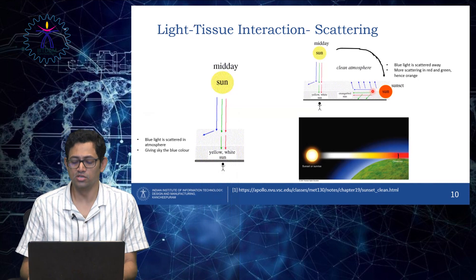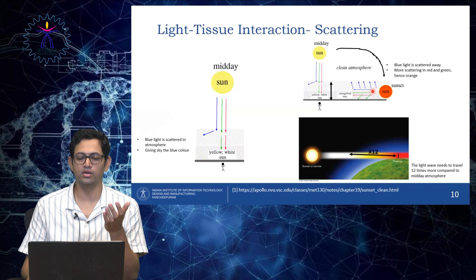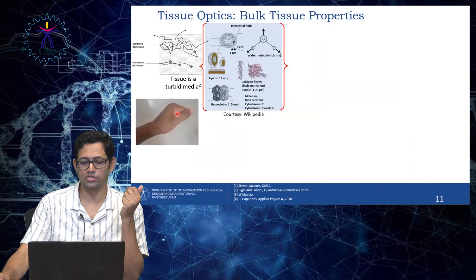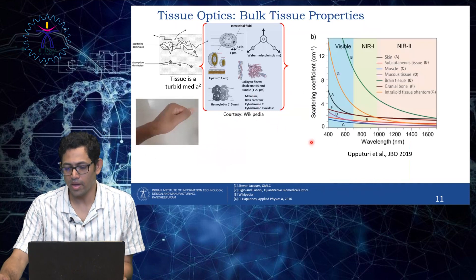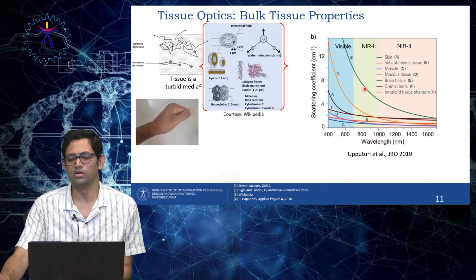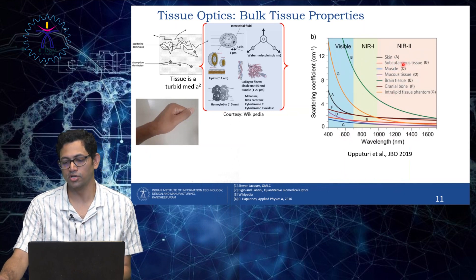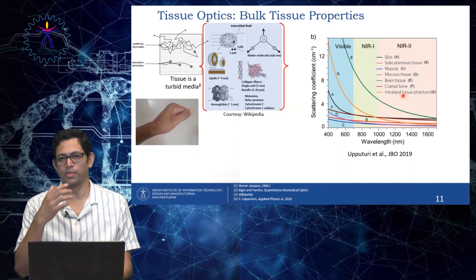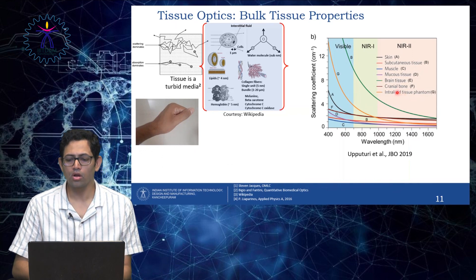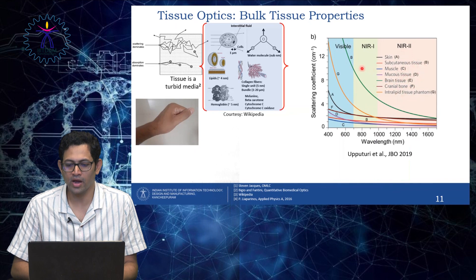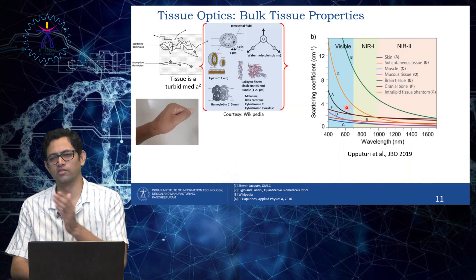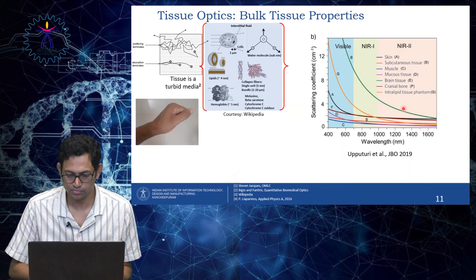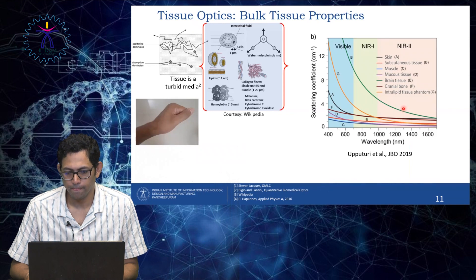Similarly, when light interacts with tissue, you get similar kinds of scattering. As the wavelength increases, the scattering actually decreases. This graph shows the scattering for different tissue types — for example, skin, subcutaneous tissue, muscle, mucus tissue, brain tissue, cranial bone, and an intralipid tissue phantom (which we will also show you how to prepare). All of these tissue materials share a similar property: scattering reduces as a function of wavelength. As you go on increasing the wavelength, the scattering actually reduces.